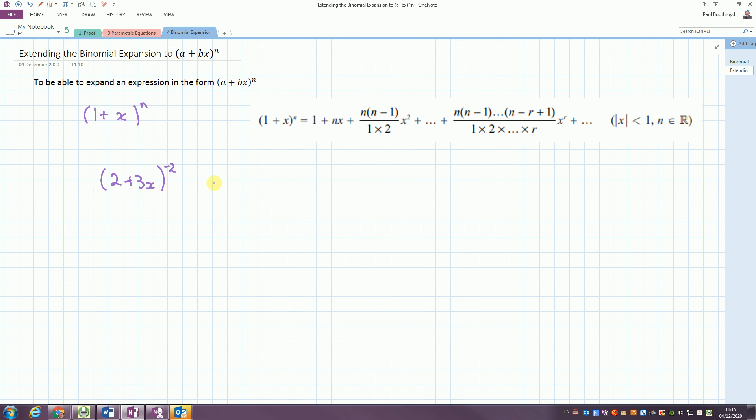So I'm going to factor out the 2. First of all, 2 to the 1 plus 3 over 2x. That's inside a bracket, so this would expand to give the bracket, and all of this is to the power of minus 2.